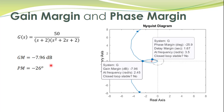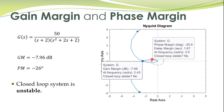The phase margin comes out to be minus 25.9 degrees and the gain margin is minus 7.96 dB. Both gain margin and phase margin are negative, so this closed loop system is unstable. Note that while MATLAB easily locates the unit-magnitude point, hand-sketched polar plots are less accurate, making phase margin determination from hand sketches difficult.